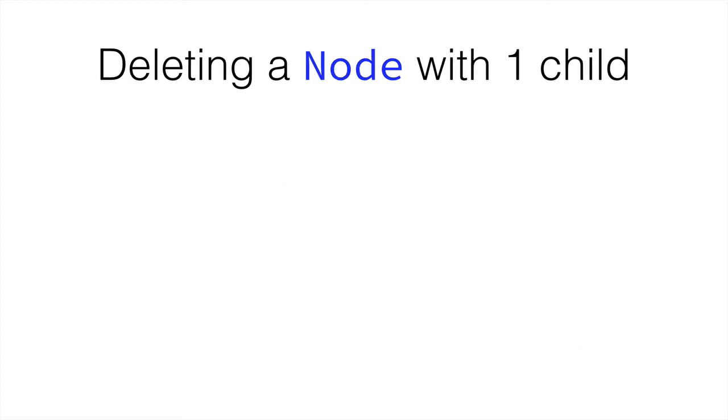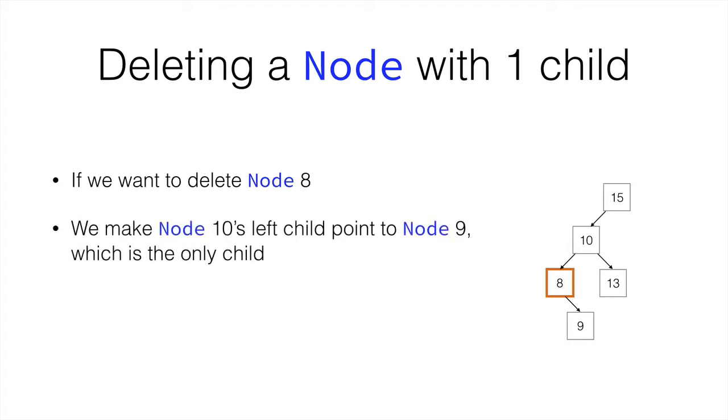How to delete a node with one child? Let's say we want to delete node 8. Node 8's parent is node 10 and node 10 has a left child which is node 8. So if we make node 10's left child point to node 9 which is the only child then Java erases node 8 from memory and 10 now points to node 9.